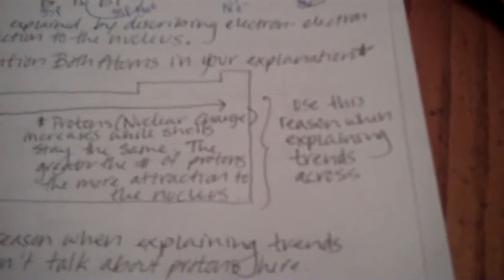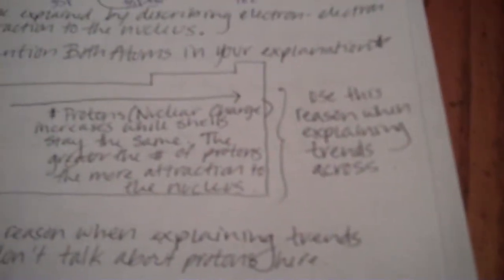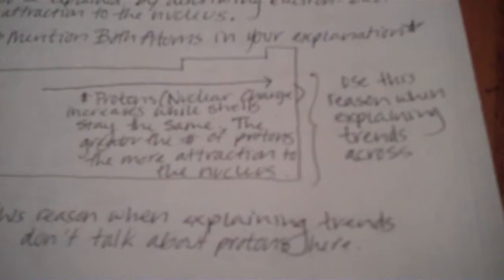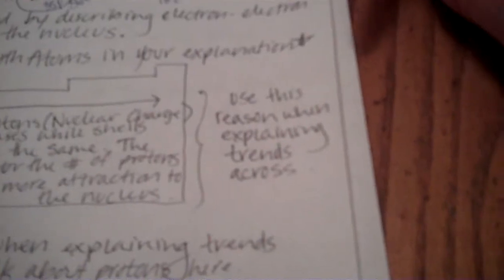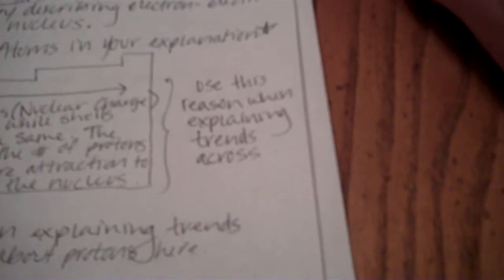Okay. Going across, you are going to talk about protons. So, going across, the number of protons increases, which you can say is the nuclear charge. So, nuclear charge increases while the number of electron shells stay the same, if we're talking about the same period. The greater the number of protons, the more attraction to the nucleus. This is the reason that you guys should use any time you're describing trends across. Make sense?